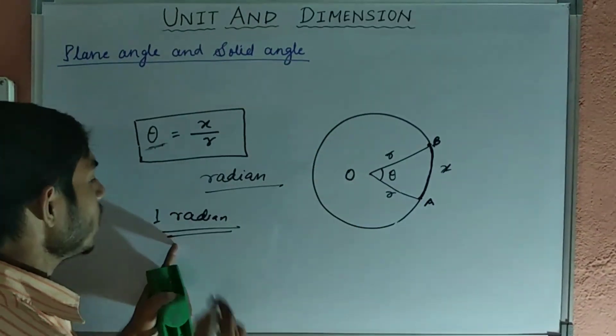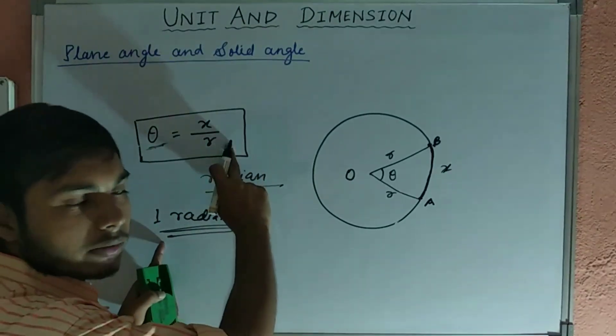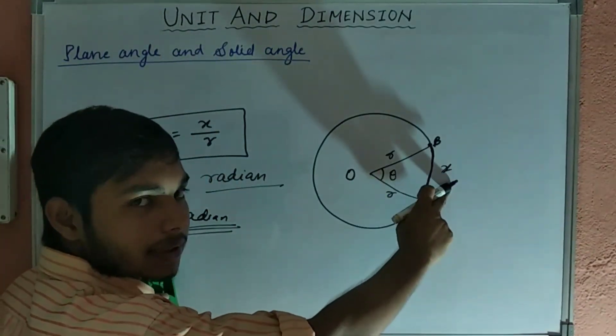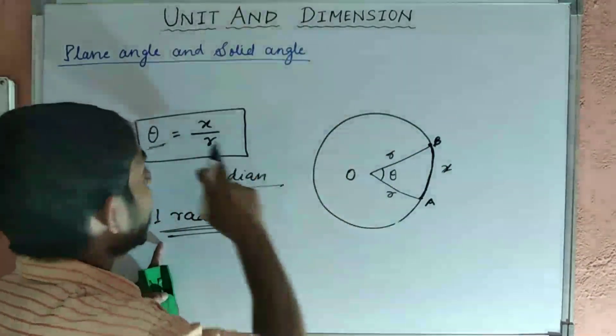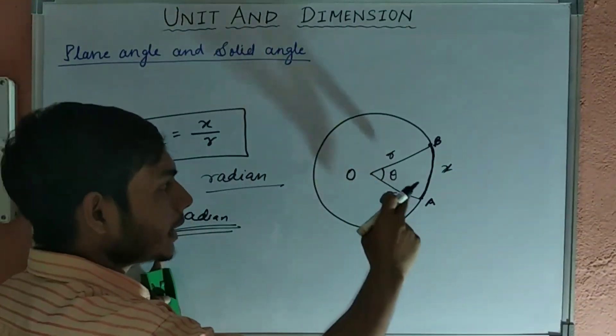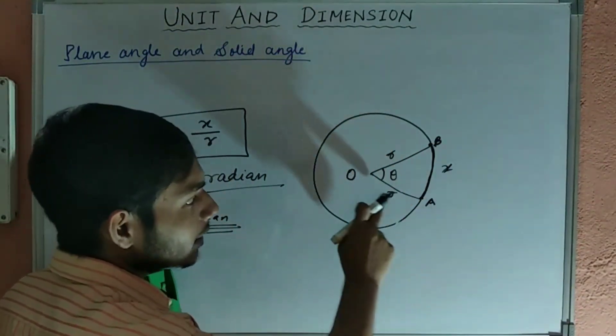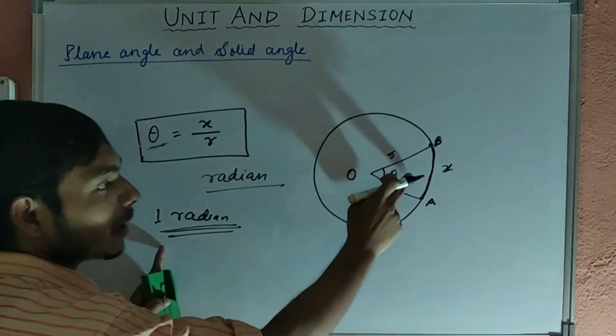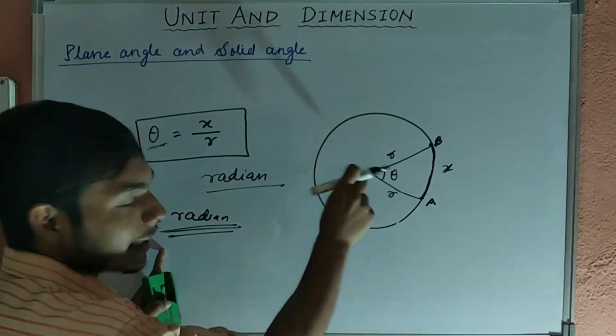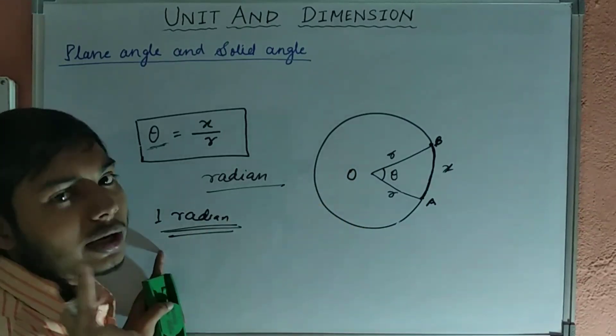Again, I am telling 1 radian will be when x and r will be equal. What is x? That is the arc of the circle and r is the radius of the circle. Therefore, when arc and the radius will be equal, then the theta, which the angle making in the middle, that is center of the circle, will be called 1 radian.